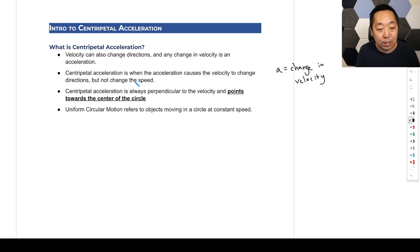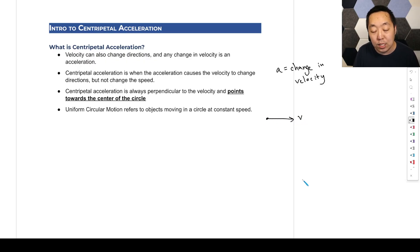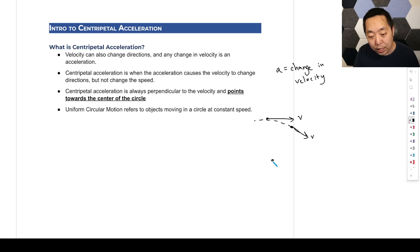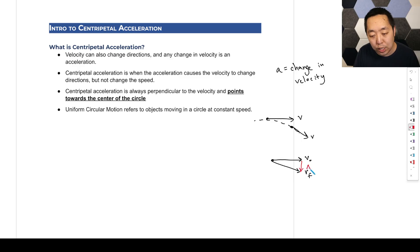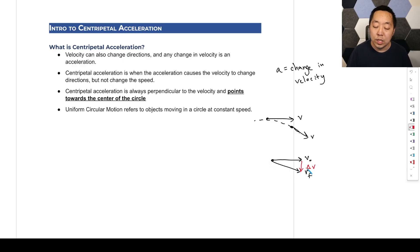The centripetal acceleration is when the acceleration causes the velocity to change directions, but not change the speed. For example, if the velocity was pointing this way and then later on, moving on a curve, the velocity points this way, there has to be a change in the velocity. If this is your initial velocity and your final velocity is here but the same length, then this here is going to be your change in velocity — this vector plus this vector gives you this vector here.